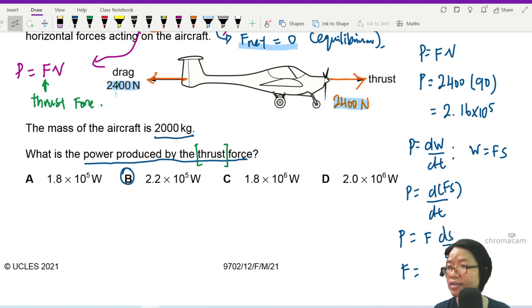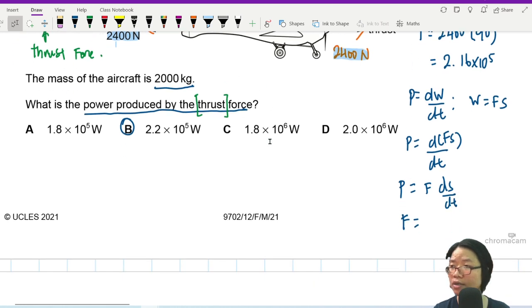And ds dt happens to be velocity. So this is FV. Because this ds dt is V.